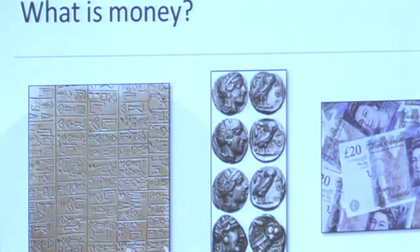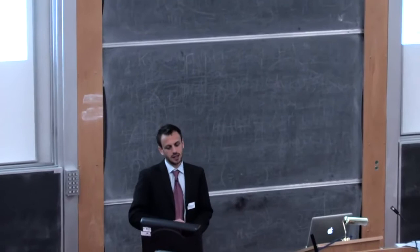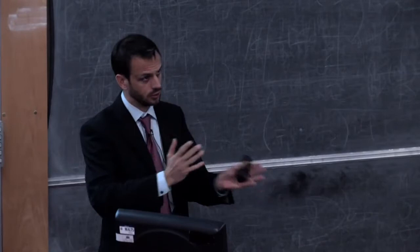And the point I want to make here is to say if money is essentially a relationship of credit and debt, then money is also socially and politically constructed because you have debtors and you have creditors. It's not this neutral commodity. And the people who determine what money actually is are those people who determine the unit of account that is used to keep those records of credit and debt.